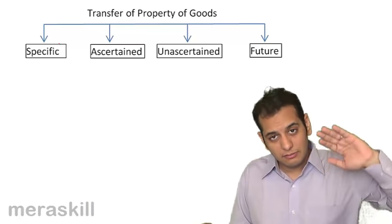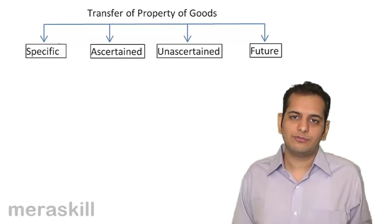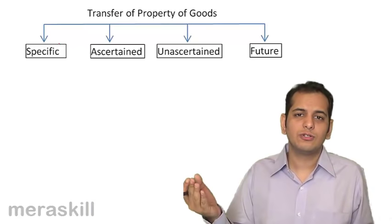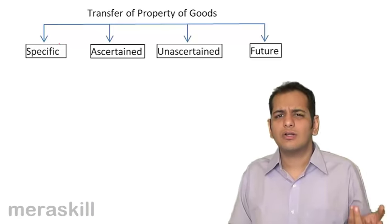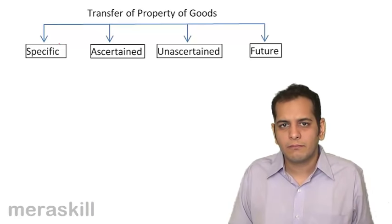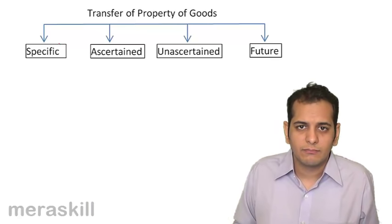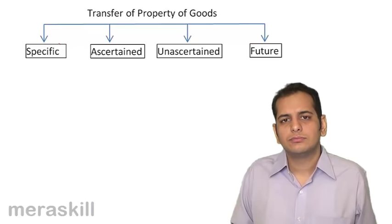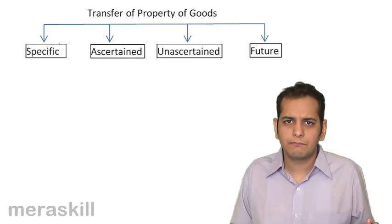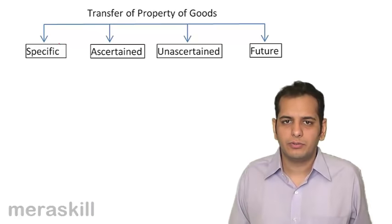Future goods are those goods which will come into existence on a future date — they are not in existence at the time of the contract of sale. So that sale contract becomes an agreement to sell, because for a sale contract the transfer of ownership is required, and ownership can only be of goods which are in existence.